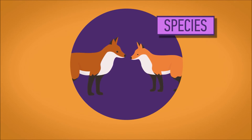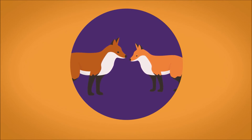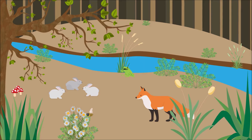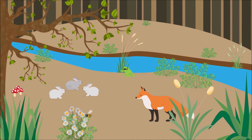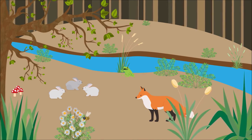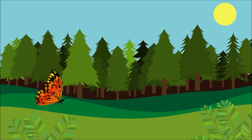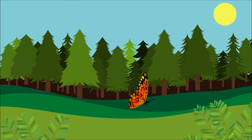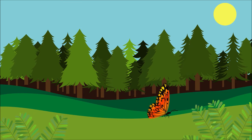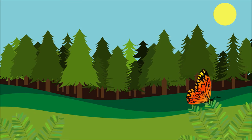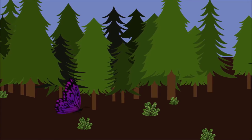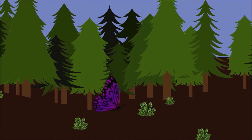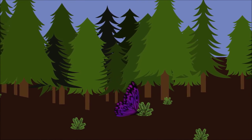A species is a group of potentially interbreeding individuals, which do not normally reproduce with other species to produce viable fertile offspring. So here in our woodland we have foxes and rabbits that are clearly different species. But we may also have a few different species of butterfly — maybe one lives on the outside of the woods and likes light, while another lives deeper in the wood, and because they prefer different areas of the wood, they don't interbreed.